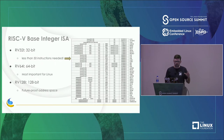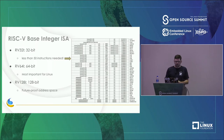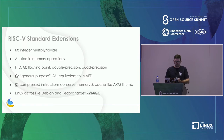There are several base integer ISAs. The basic one is RV32I — 32-bit integer, only 50 instructions. For Linux, we're most interested in 64-bit. There's also 128-bit to future-proof the address space. Standard extensions relevant for running Linux include: M for multiply, A for atomic, F, D, and Q for different floating-point precisions, and G as shorthand for multiply, atomic, and double float — general purpose.